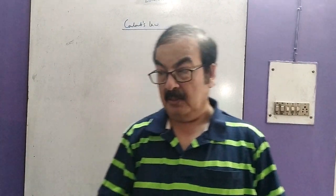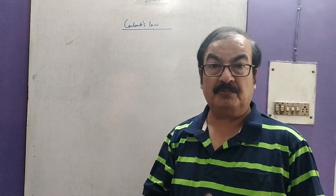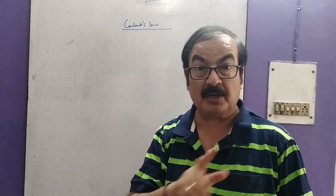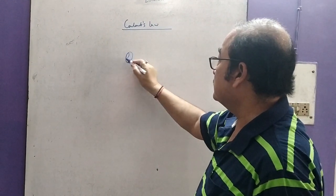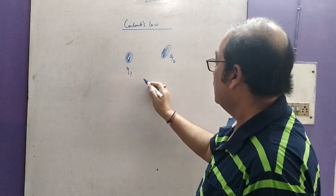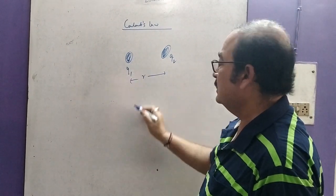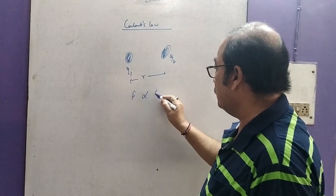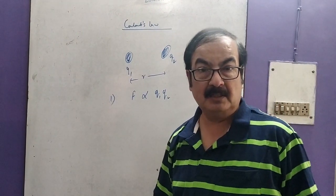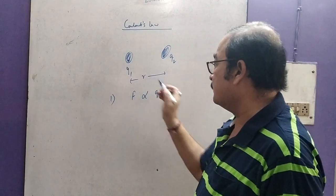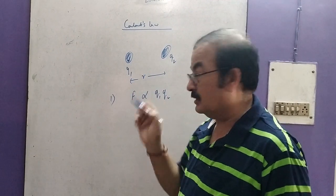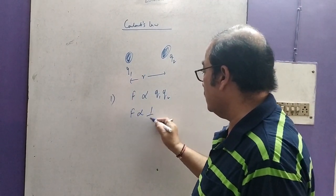Now let us see what Coulomb's law is. Coulomb's law states that the force between two point charges is directly proportional to the product of charges — this is the first charge Q1, this is the second charge Q2, and the distance between them is R. So F is directly proportional to Q1 times Q2. The second part of the law is that this force is inversely proportional to the square of the instantaneous distance between the two charges — that is, F is proportional to 1 upon R squared.